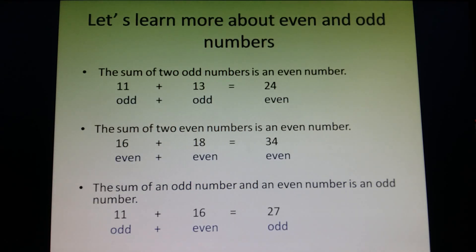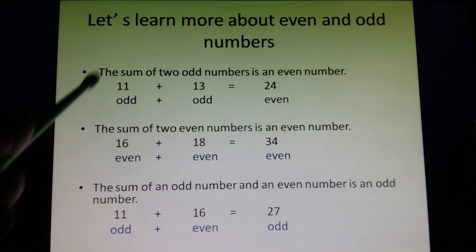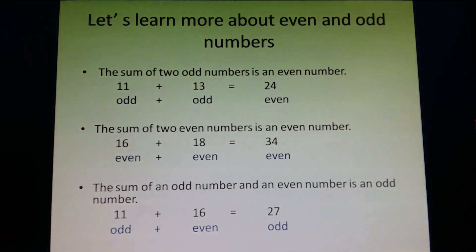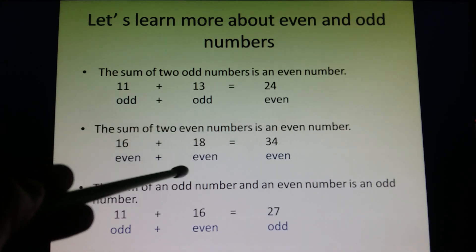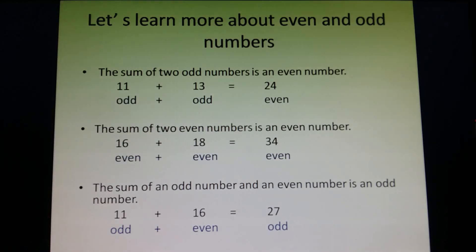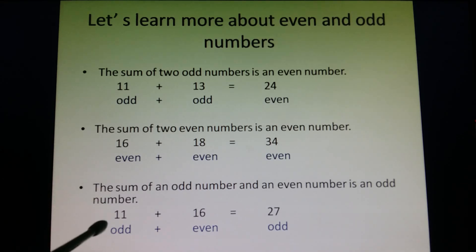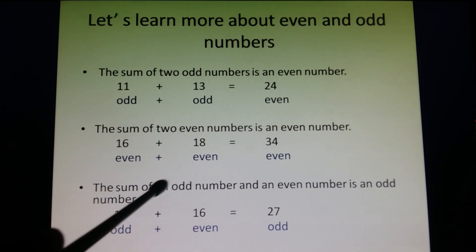Let's learn more about even and odd numbers. The sum of 2 odd numbers is an even number — for example, 11 plus 13 gives 24. The sum of 2 even numbers is also an even number — 16 plus 18 equals 34. And the sum of an odd number and an even number is an odd number — for example, 11 plus 16 equals 27.